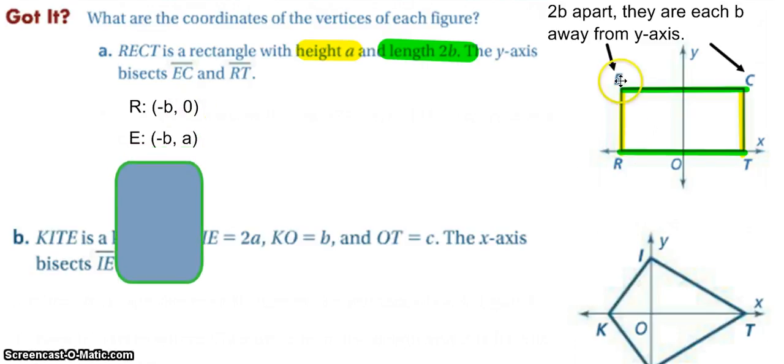E up above it has negative B A, C is positive B positive A, and T is B zero.